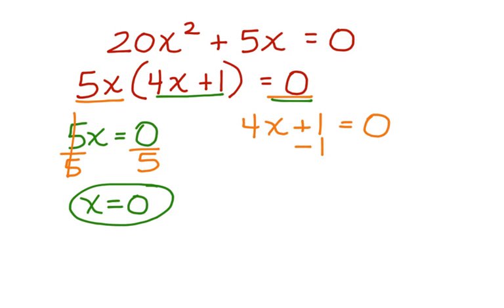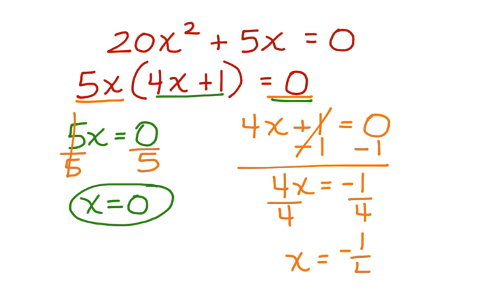Here I have take away 1, take away 1. These cancel. Bring down the 4x is equal to negative 1. Divide both sides by 4, and I have x is equal to a negative 1 fourth. Now, I have solved the polynomial equation by using the zero product principle.